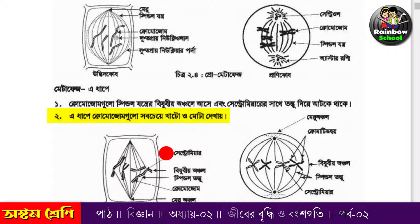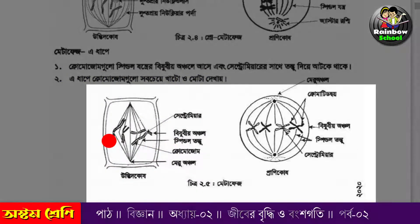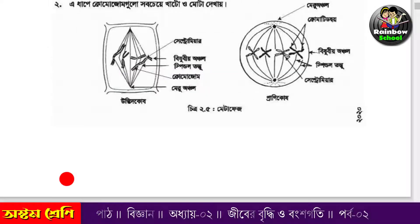দ্বিতীয় যে ছবিতে আমরা দেখলাম যে মেরু অঞ্চল থেকে মাঝখানে চলে আসে এবং ক্রোমোজমের সেন্ট্রোমিয়ারগুলো বিষুবীয় অঞ্চলে চলে আসে। তাহলে আজকের এই পাঠ আমরা এখানেই শেষ করছি। পরবর্তী কোনো পাঠ নিয়ে পরবর্তী ক্লাসে আসবো। সবাই ভালো থেকো, সুস্থ থেকো। আসসালামু আলাইকুম।